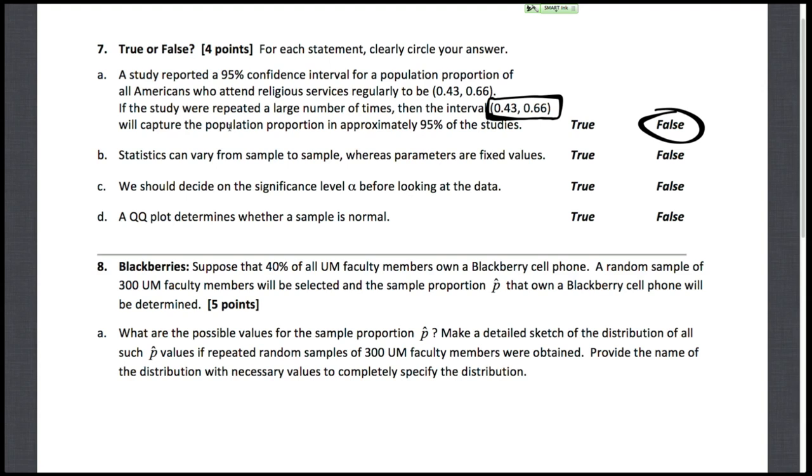So for the next one, statistics can vary from sample to sample, whereas parameters are fixed values. This is true. Statistics will vary depending on who you sample, but parameters are for your whole population. And when you conduct a survey, if you know that your whole population isn't changing.